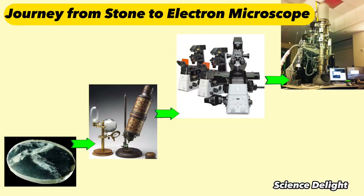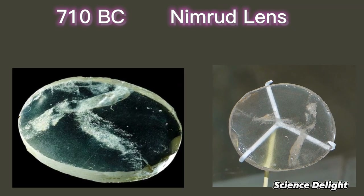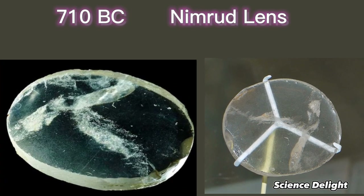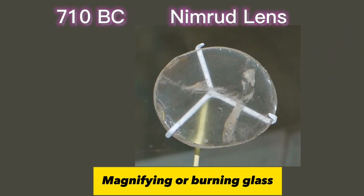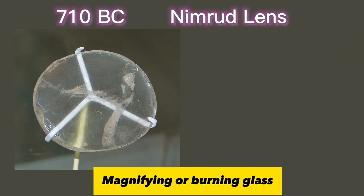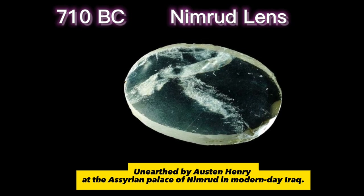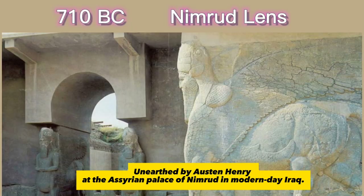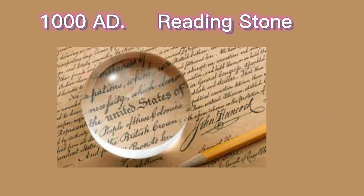Today we discuss the journey from stone to electron microscope. The first is the 710 BC Nimrud lens — a piece of rock crystal used as a magnifying glass or burning glass, later unearthed by Austin Henry at the Assyrian palace of Nimrud in modern-day Iraq. Around 1000 AD, the reading stone became the first vision aid.